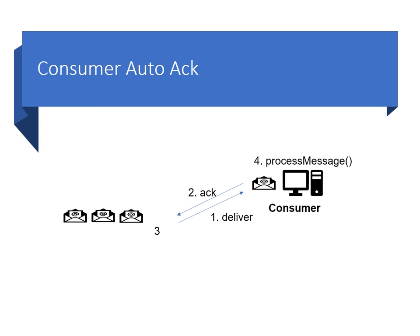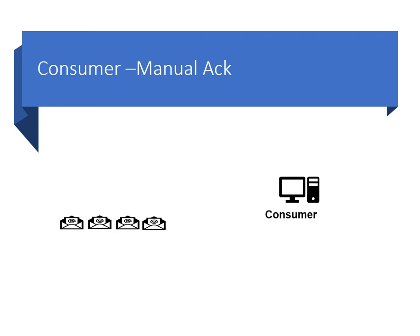This is all well and good, but what happens if the consumer crashes before the message is fully processed? If a consumer crashes before fully processing a message, we risk losing the message content and its associated processing. For this reason, often a consumer will want to ensure a message is fully processed before acknowledging it. In this case it will utilize manual acknowledgements. This guards against the possibility of a message being delivered to a consumer but not being processed due to a consumer crash. It does, of course, increase message acknowledgement latency.